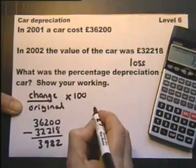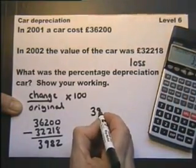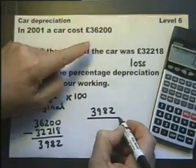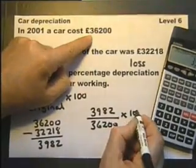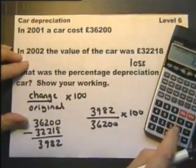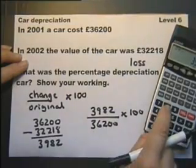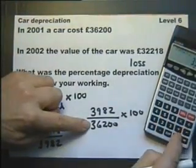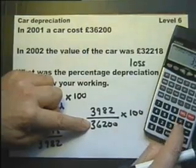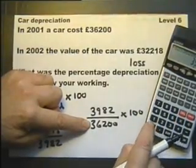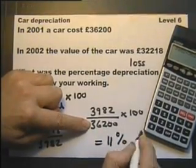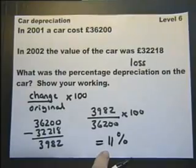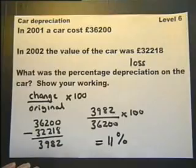So the percentage change is to put the change from one figure to another over the original figure and then multiply by 100. So we've got 3982 divided by 36200 multiplied by 100, and that gives us an answer of 11%. There's 11% depreciation or loss in value between 2001 and 2002 on this car.